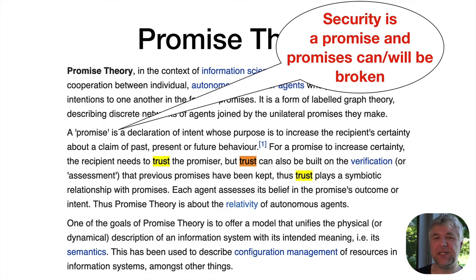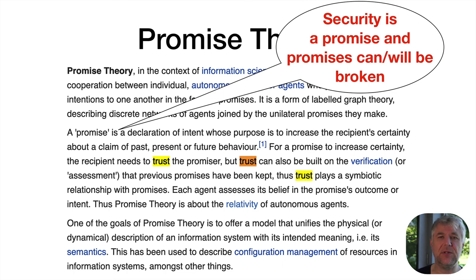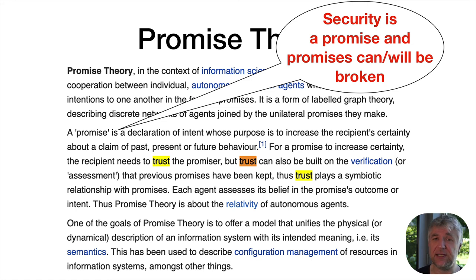As Mark Burgess put it in his promise theory, security is a promise — and a promise can be broken, and it will be broken. Ultimately, us assembling and working on things, we are responsible for security. It's like dependencies in production: if we depend on one system and it fails, we bring in redundancy. We need to do this in our development process as well — on the library perspective, look for alternate libraries, look for abstraction layers.